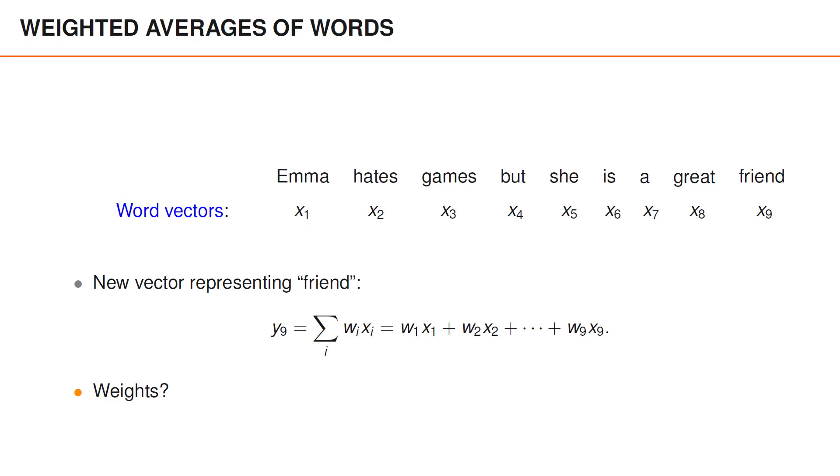But it seems to make less sense to do that here since it might yield large weights for words like is and a.